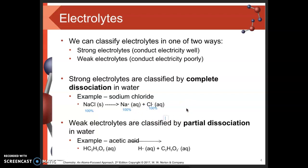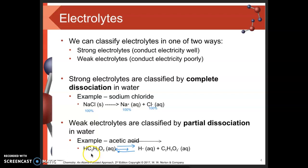Weak electrolytes, on the other hand, are characterized by partial dissociation in water. For example, acetic acid doesn't completely break down in water — it only breaks down partially. We think of these reactions as reversible: acetic acid can break apart into its ions, but those ions can also come back together to reform acetic acid. On average, about 96% of acetic acid molecules stay as molecules, and only about 4% actually dissociate to form ions.